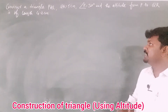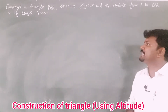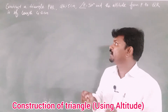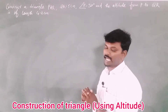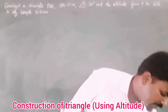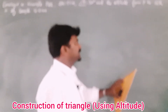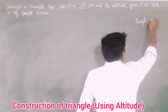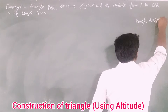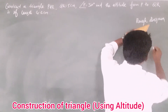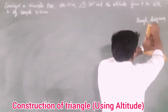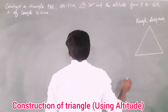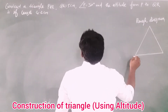Hello students. In this video we are going to see practical geometry - construction of a triangle using altitude. When the altitude of a triangle is given, how to draw and construct that triangle. First, we have to draw the rough diagram in the right corner. No need to take any measurement, just draw a triangle and write the given measurements.